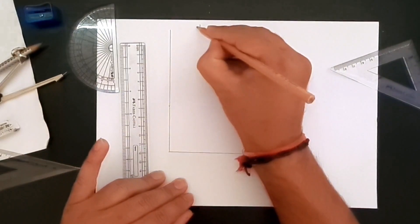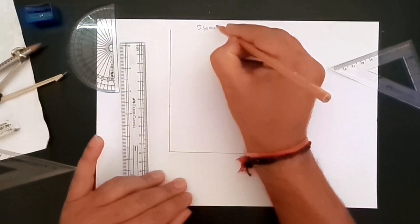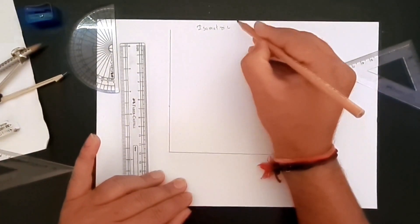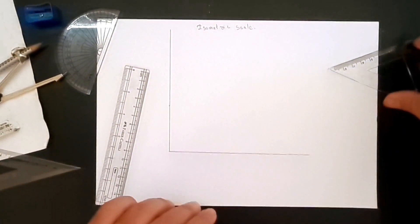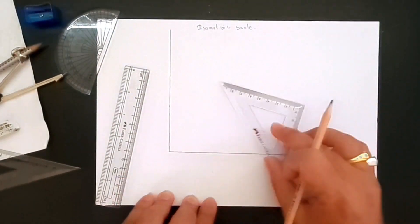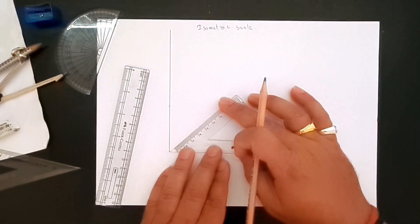So this is our isometric scale. Now what we need to do is create two lines. One would be at 45 degrees, which will be our real or isometric drawing line.